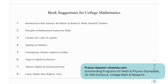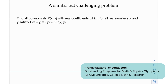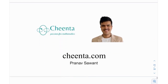At the end we have a similar but challenging problem: find all polynomials P(x, y) with real coefficients such that for all real numbers x and y, P(x+y, x−y) = 2·P(x, y). Try it out and if you make any progress, let me know in the comment section. Until then, see you in the next video — thank you very much, bye-bye.